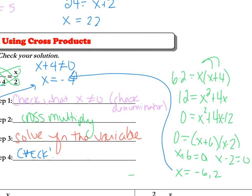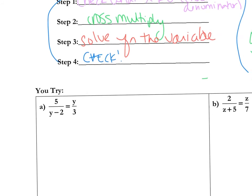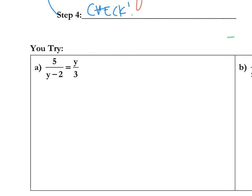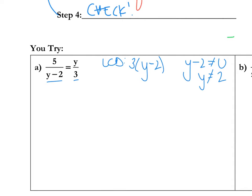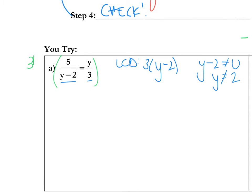I'm going to do one more doing it the other way, finding the LCD first. So for example A, instead of cross-multiplying, we find the LCD by looking at the denominator — that gives us 3 and y minus 2. Once you have the LCD, find out what the variable cannot equal. y minus 2 cannot equal 0, so y can't equal 2. Then we multiply both sides by the LCD and look to see what cancels. This cancels on this side and you're left with 3 times 5. This cancels on the right side, so you're left with y times y minus 2. If you cross-multiply, notice you would have gotten the same exact thing: 5 times 3, y times y minus 2.